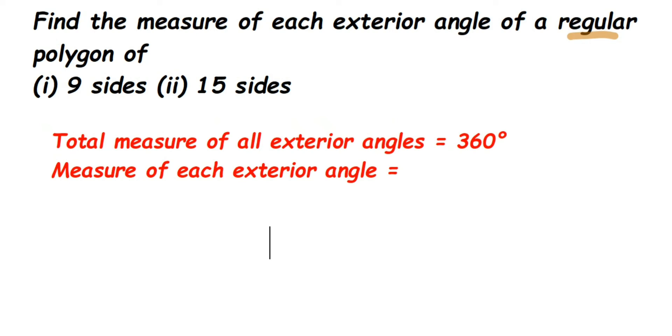So it is 15 sides means I will divide this by 15. So 360 degrees I am going to divide by 15. I am dividing by 15 because I have 15 exterior angles. 15 sides means 15 exterior angles, 15 interior angles will be there. So I am dividing 360 into 15 equal parts. That's it.